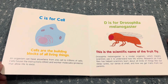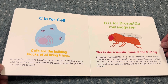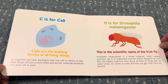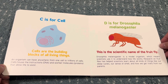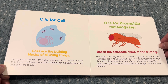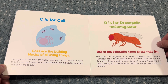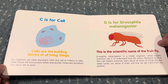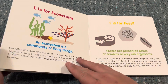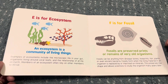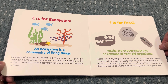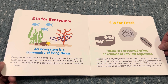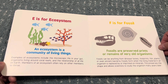C is for cell. Cells are the building blocks of all living things. D is for Drosophila melanogaster. This is the scientific name of the fruit fly. E is for ecosystem. An ecosystem is a community of living things.